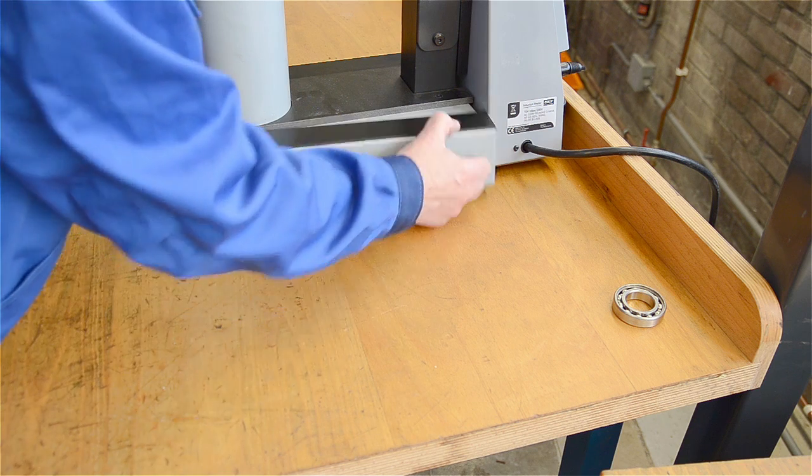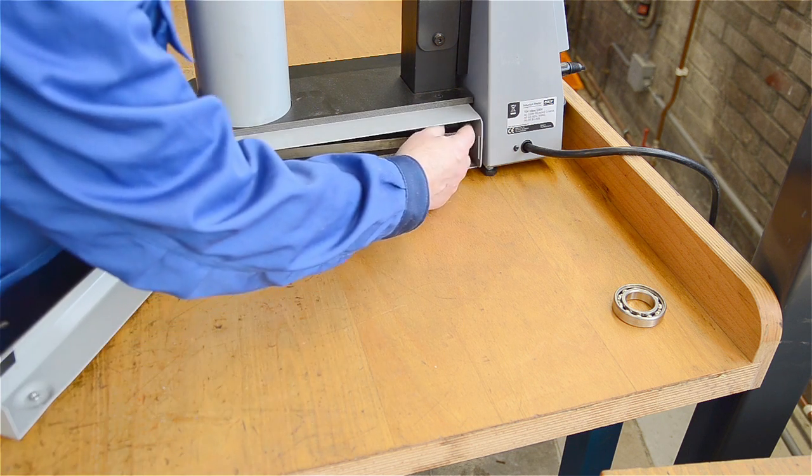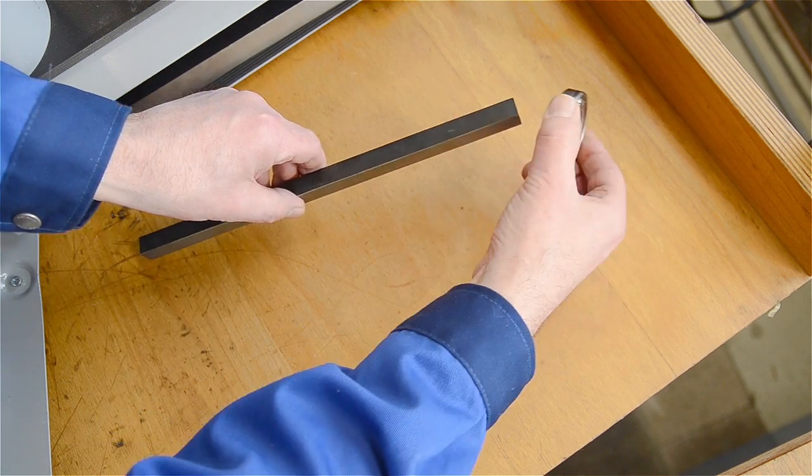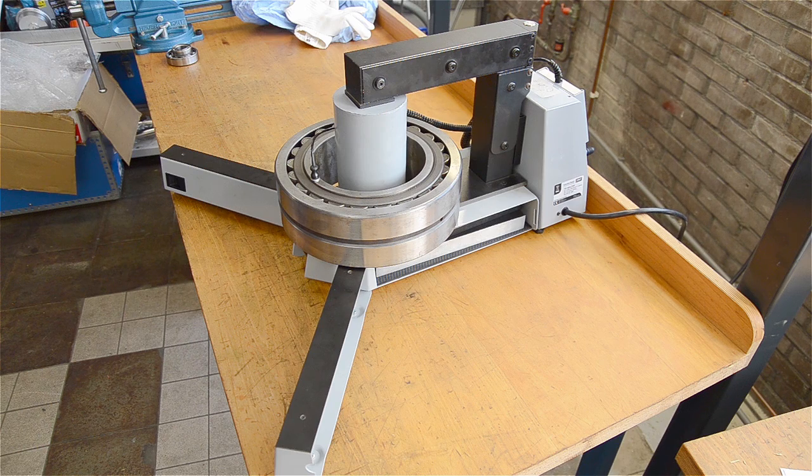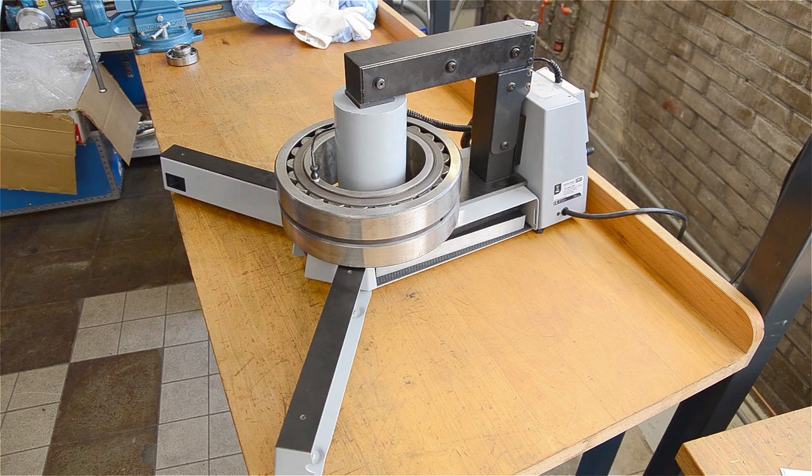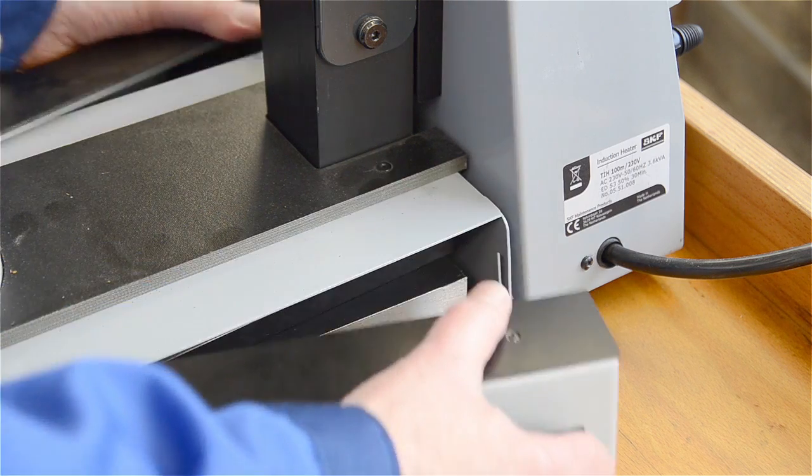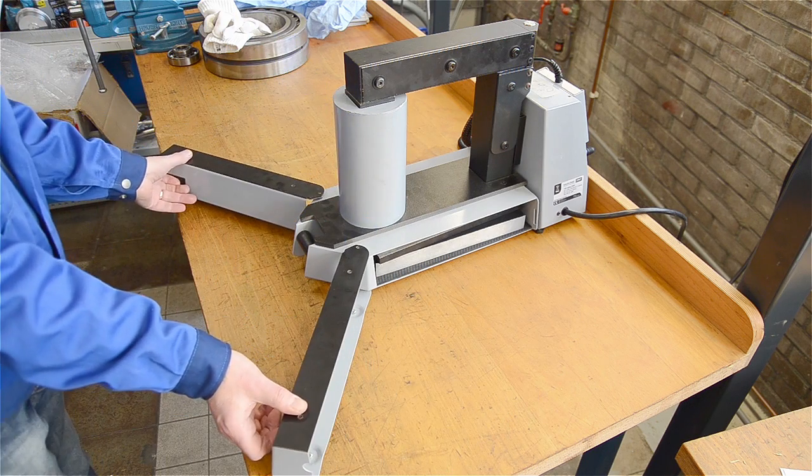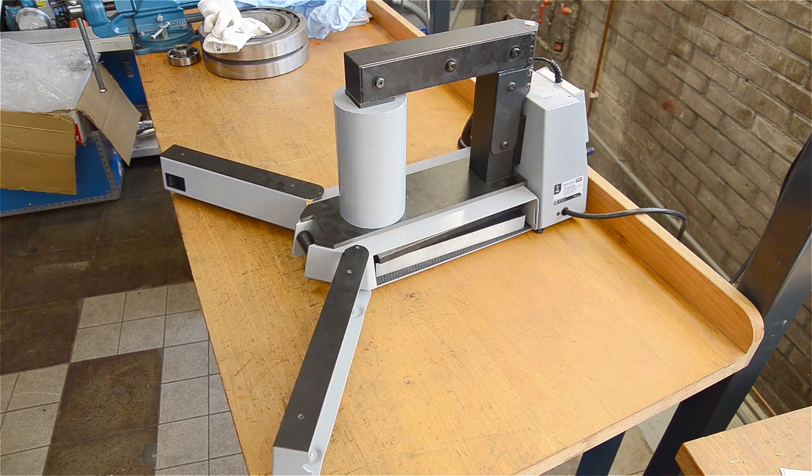Choose the appropriate yoke for the bearing to be heated and place the bearing on the yoke. Better still, if there is space around the coil, place the bearing here for even higher efficiency. SKF heaters have built-in adjustable support legs to make this option really easy.